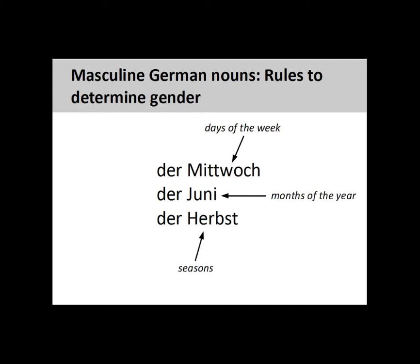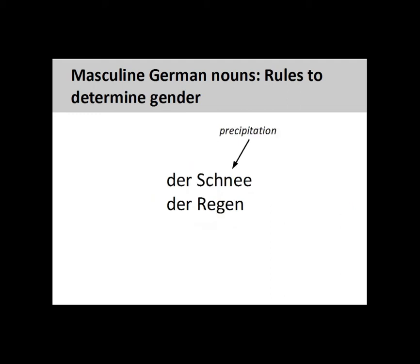Most seasons are masculine nouns — for example, 'Herbst' (fall). Forms of precipitation, such as 'Schnee' (snow) and 'Regen' (rain), are also masculine nouns.